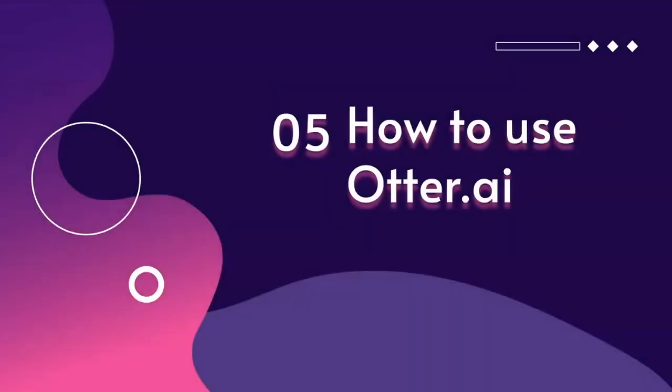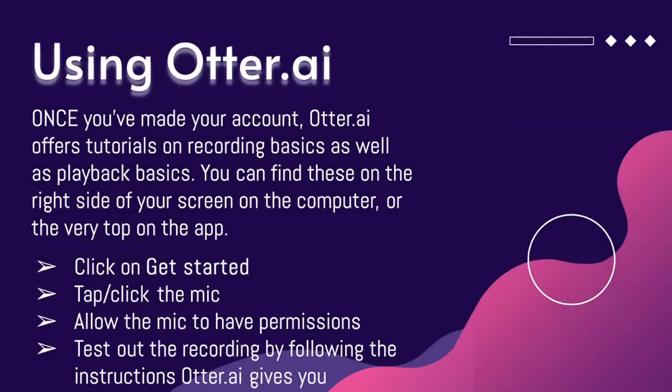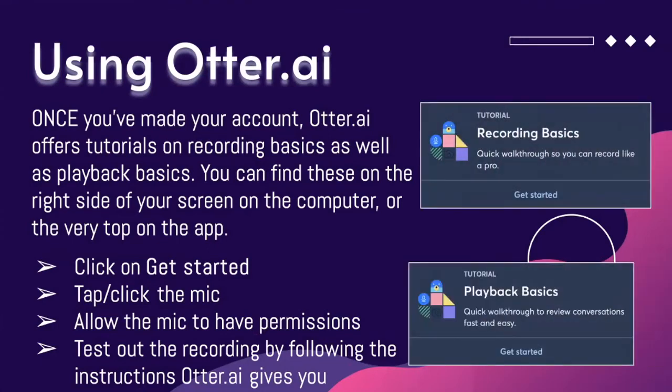How to use Otter.ai: once you have made your account, Otter.ai offers tutorials on recording basics as well as playback basics. You can find this on the right side of your screen on the computer, or at the very top on the app. Click on Get Started, tap or click the mic, allow the mic to have permissions, and test out the recording by following the instructions Otter gives you.